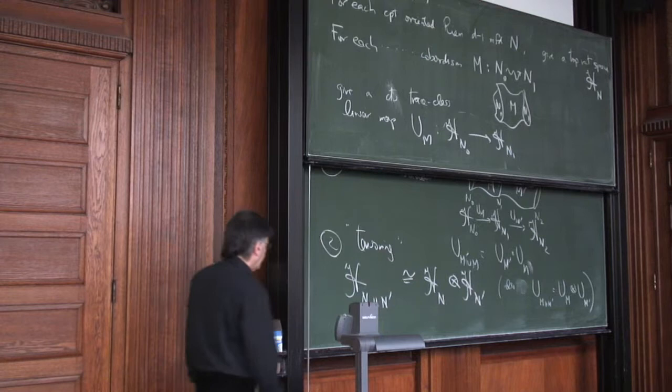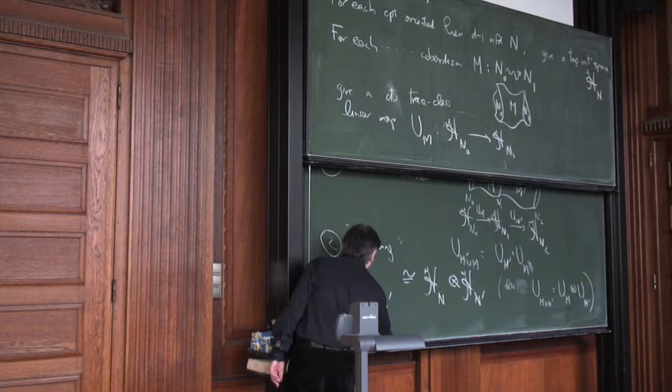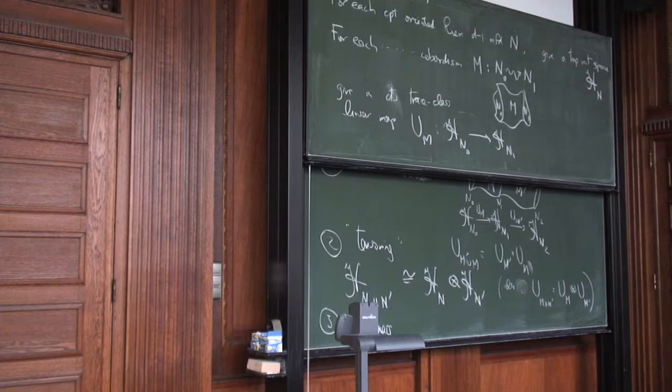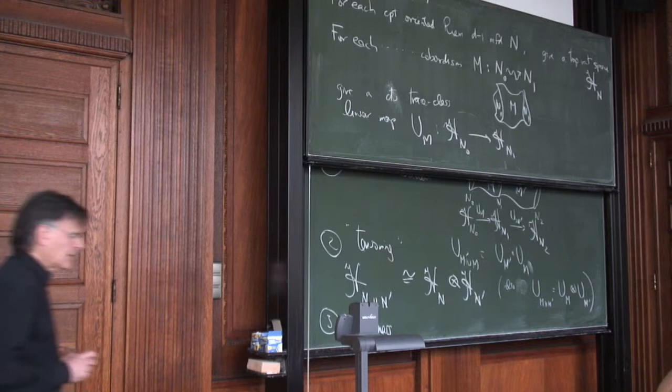Third, smoothness: that's just meant to say that if you have a smooth family of manifolds parametrized by some smooth parameter space, then all of this data varies smoothly. The vector spaces form vector bundles over the parameter space and so on.